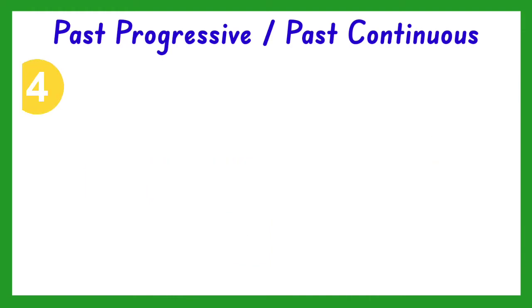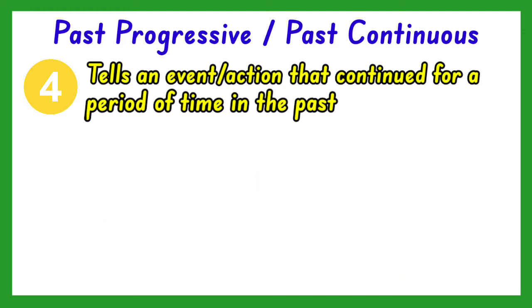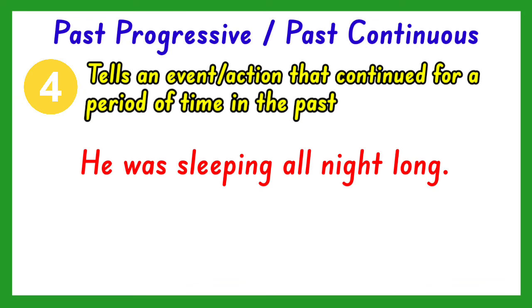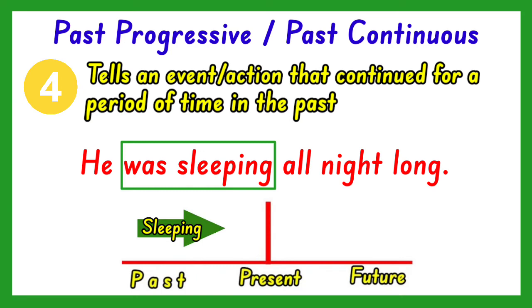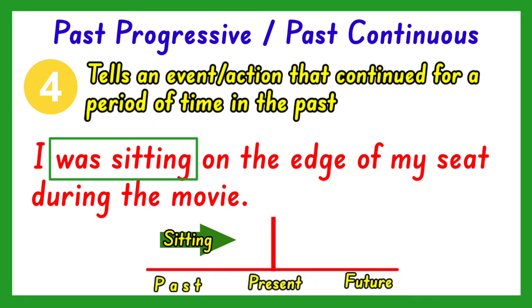The last case where we can use the past progressive tense of the verb is when it tells an event that continued for a period of time in the past. For example, He was sleeping all night long. The verb in the past progressive form is was sleeping, and the action continued for a period of time — all night long. Another one: I was sitting on the edge of my seat during the movie. The past progressive verb is was sitting, describing an action that was going on for a period of time in the past, during the movie.